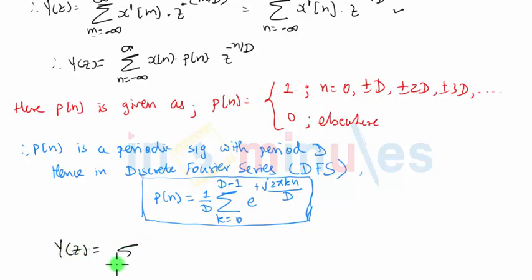Y of Z will be summation. It was X of N. I'm not doing anything with X of N. We are replacing for P of N. So this P of N is 1 by D summation e raised to J 2 pi K N by D, where K will vary from 0 to D minus 1, and apart from that you already had Z raised to minus N. The summation variable, this outside summation, will be N equal to minus infinity to plus infinity.